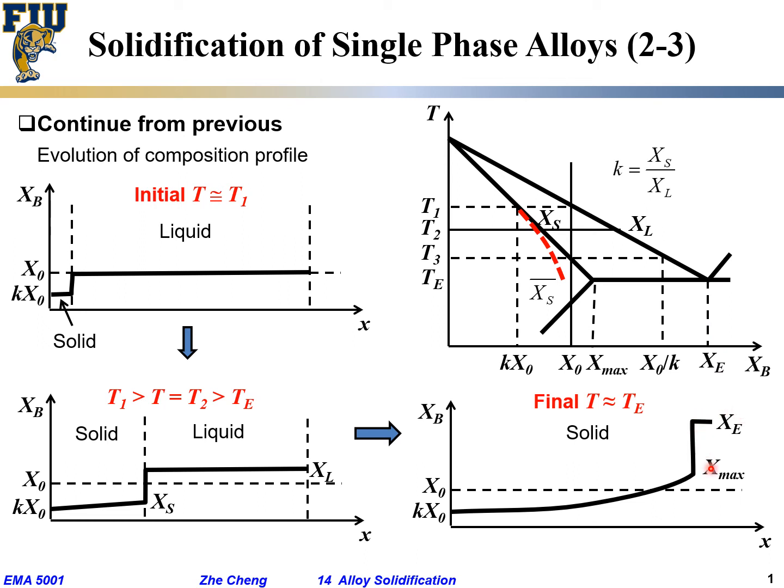And then right at the interface, right at the interface between liquid on the right, solid on the left, right at the interface what's the solid composition? If temperature is here, the solid at the interface would be this guy, x_max. And x_max as we draw is slightly higher than x0. So this would be the solid composition within the material. And this effect is what we call, again,